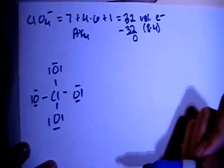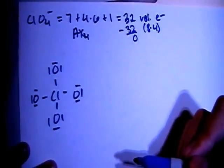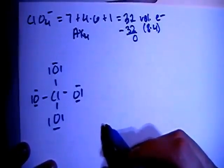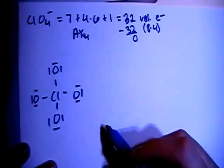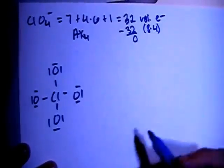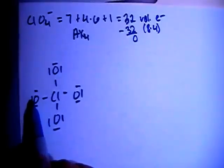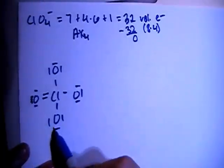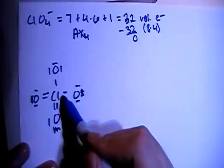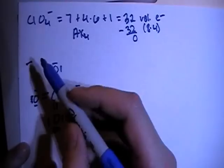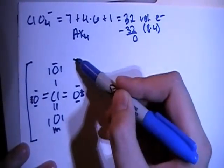At first this might seem like it's the appropriate structure, but once you calculate the formal charges, you'll find that this is not really the ideal structure. Knowing that chlorine is in the third period, it has a D subshell, so it can have more than 8 electrons and go beyond the octet rule. So what we're going to end up doing is moving three of these non-bonding pairs to create double bonds, giving us three sets of double bonds and one single bond.